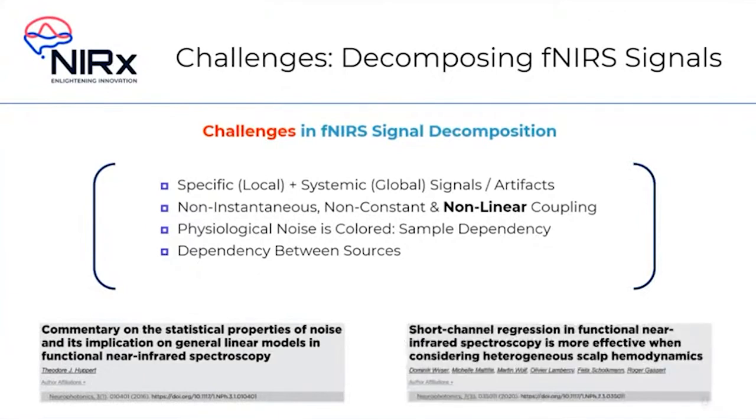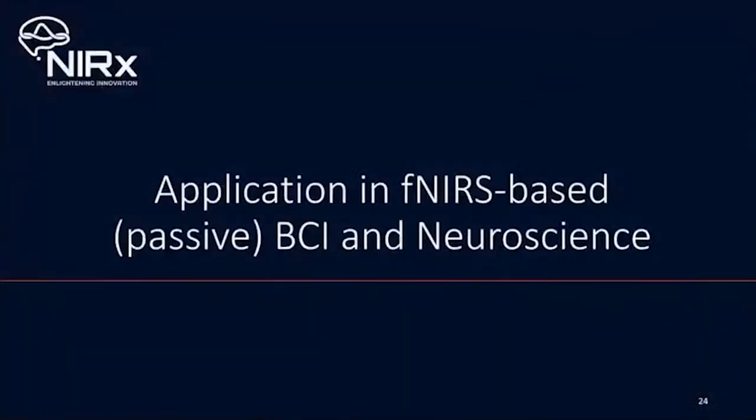fNIRS signals are very challenging if you want to decompose them well with PCA, ICA, or CCA for the following reasons. We have localized and global components or signals and artifacts in our fNIRS channels. If you have your heart rate, a heartbeat is a global systemic signal that mixes into the fNIRS channels but very differently depending on vasculature, might have different delays and amplitudes. We have non-instantaneous, non-constant, and non-linear coupling. The question is how much does it hurt us to ignore that? There are two papers I want to recommend - one from Ted Huppert in 2016 on statistical properties of noise in fNIRS.